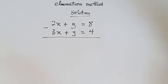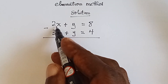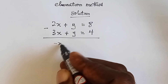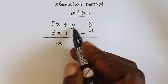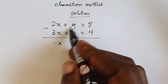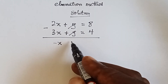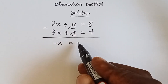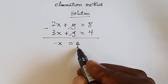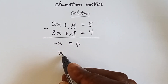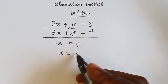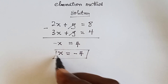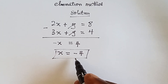So two minus three gives us minus one, giving us minus x. Then y minus y gives us zero — eliminated. And then minus four gives us four. From here it means x equals minus four, so the value of x is minus four.